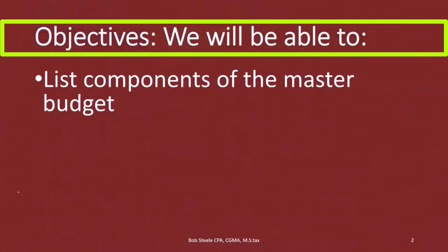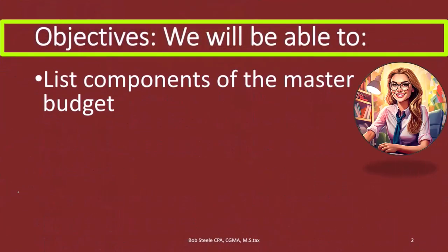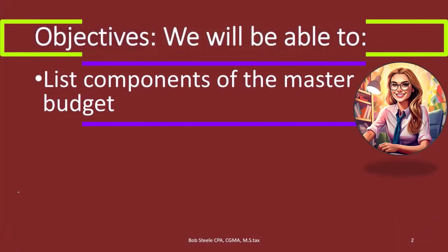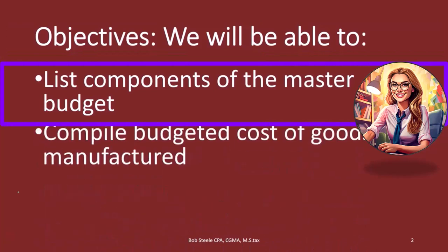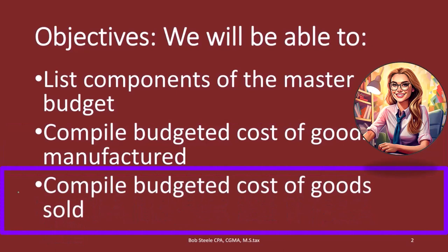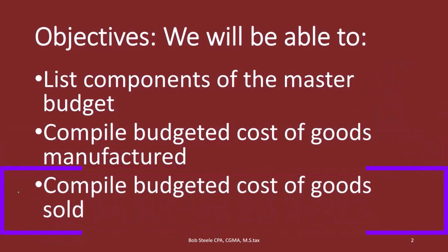At the end of this, we will be able to list components of the Master Budget, compile Budgeted Cost of Goods Manufactured, and then compile the Budgeted Cost of Goods Sold.